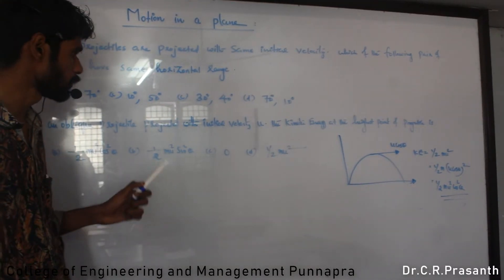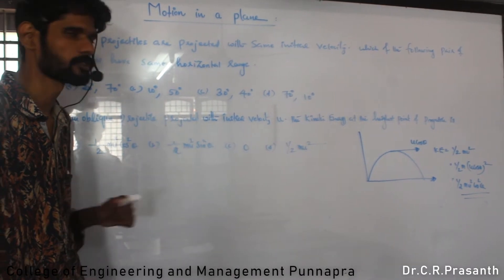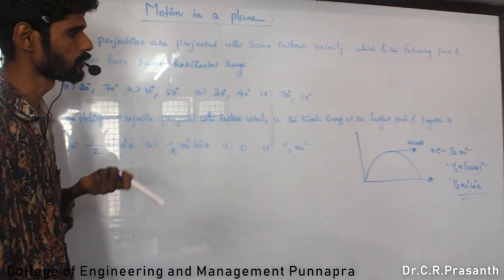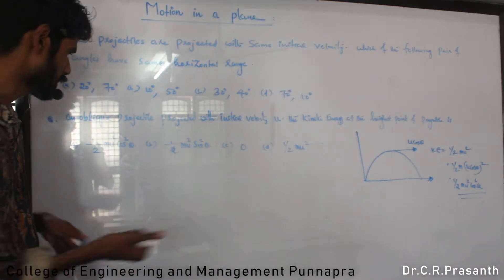At the highest point, kinetic energy is not zero. The vertical direction velocity becomes zero. The horizontal component remains constant throughout the journey. So kinetic energy at the highest point is half m u squared cos squared theta.